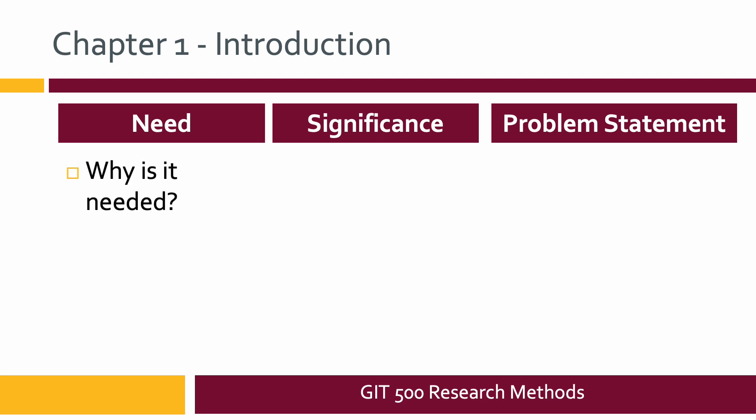You're going to have to show need — why is it needed? Base this on citable facts. Remember, in all the chapters you can write what you believe, but you have to have a reputable source that says the same thing, and then you have to cite that source. Go find a reputable source and cite it. This is not an opinion paper; it's not a persuasion paper. You have to base things on citable facts.